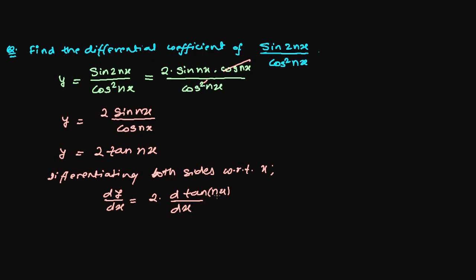But we cannot differentiate it directly. We cannot differentiate with respect to x here now, so we need to first differentiate with respect to its angle and then differentiate the angle with respect to its base. So it is 2 times derivative of tan nx with respect to nx, and now let's multiply dnx over dx.